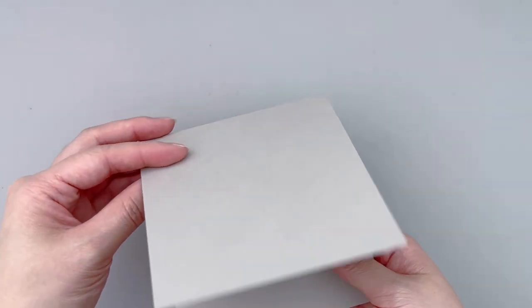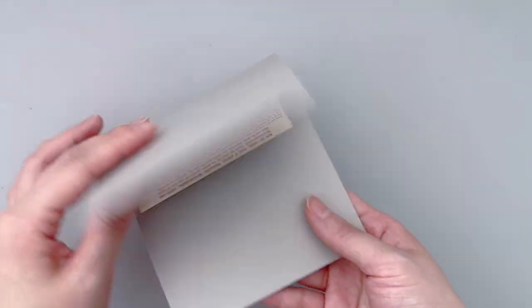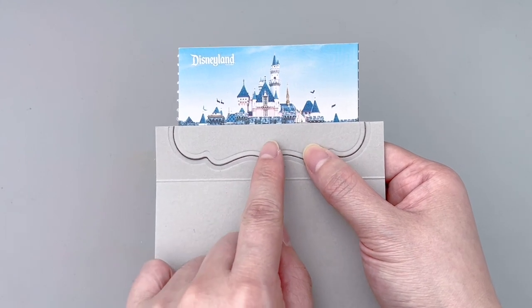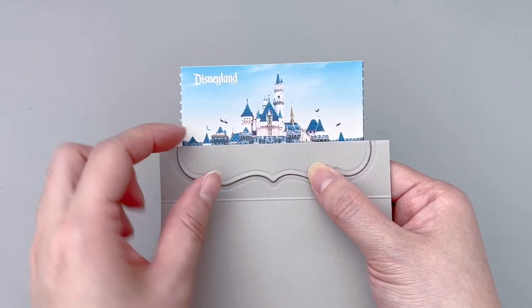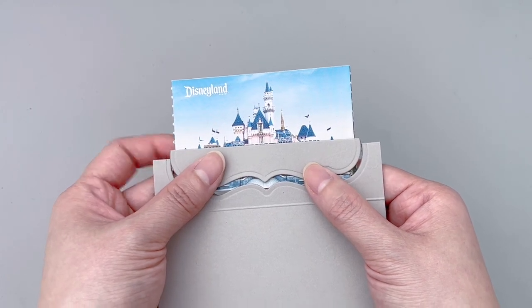Here I'm using a Disneyland ticket as an example to demonstrate what the holder mechanism would look like. I think I set my dies a little too close to the score lines. It would be more ideal if you cut off a little bit so there's more cardstock that can hold the gift card or ticket.